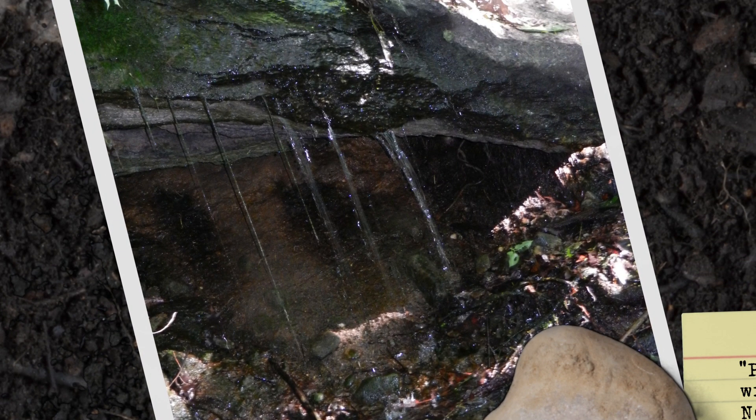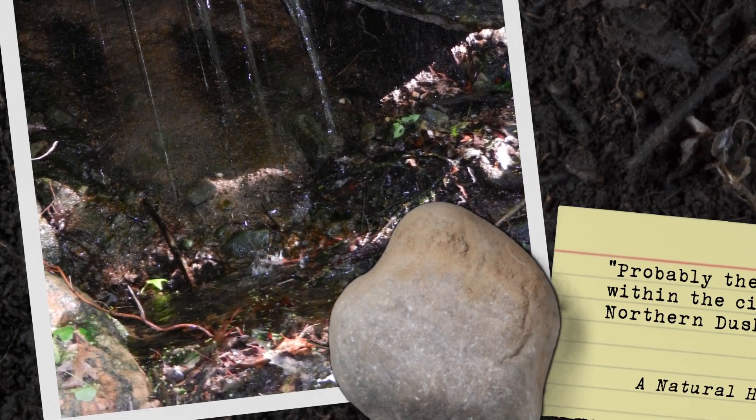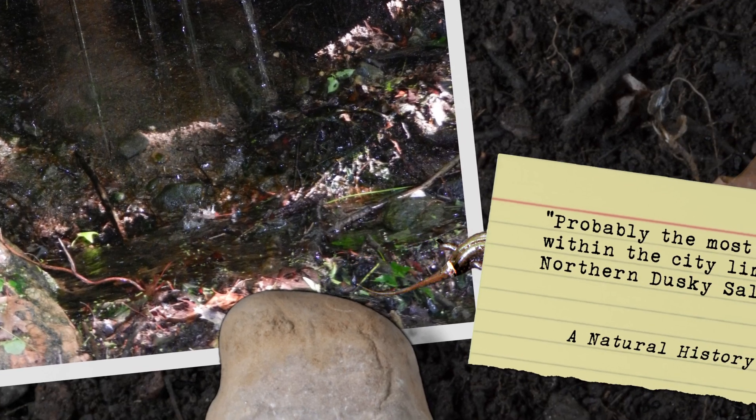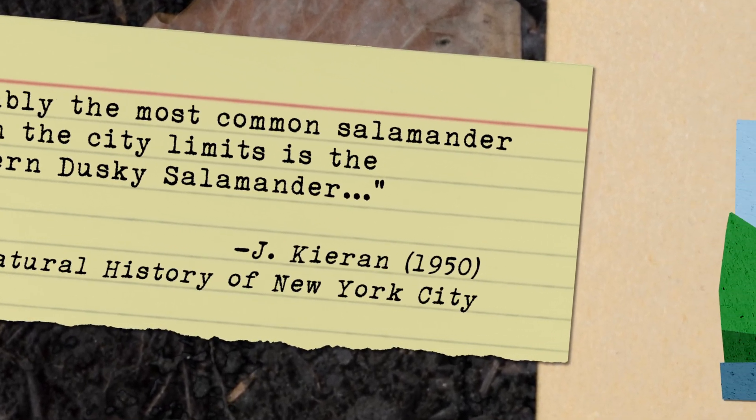Take this forested hillside in northern Manhattan, for example. This is one of the last areas left in the city where there's clean spring water still seeping out of the ground. You could drink this out of your hands, you'd be okay. These tiny little areas of seeping water contain huge populations of northern dusky salamanders. These guys were common in the city maybe 60 years ago, but now they're just stuck on this single hillside and a few places in Staten Island.